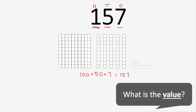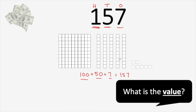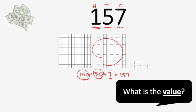We can also ask about the value — what the value is of each digit in the number 157. When we think about value, we're thinking about how much each digit is worth. A digit's place, where it is, tells us its value, just like we showed when we wrote expanded form. The value of the one is 100, because this one is worth 100. The value of the five in 157 is 50, because it's in the tens place — so this five represents five groups of 10. And the value of the seven in 157 is just seven, because it's in the ones place, so it's worth seven single ones.